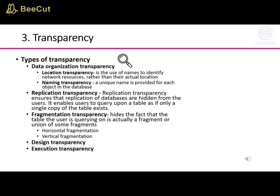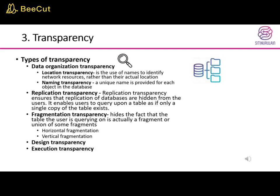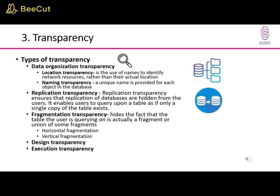There are a number of types of transparency in distributed databases. Data organization transparency consists of location transparency, which uses names to identify network resources rather than their actual location, and naming transparency, where a unique name is provided for each object in the database. Replication transparency ensures that replication of databases is hidden from users, enabling users to query a table as if only a single copy exists.